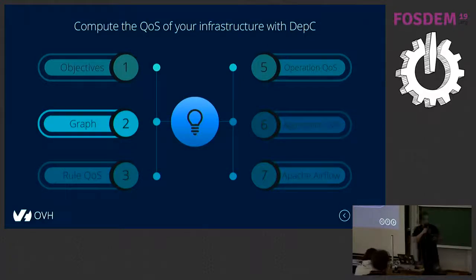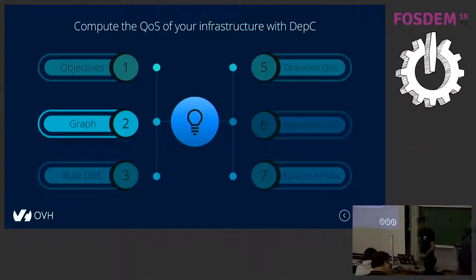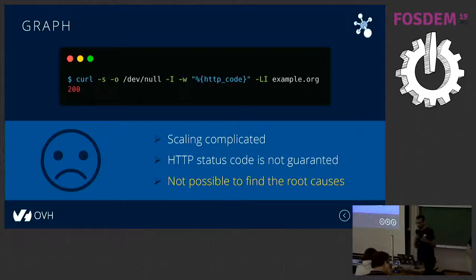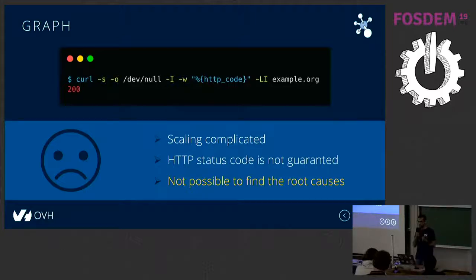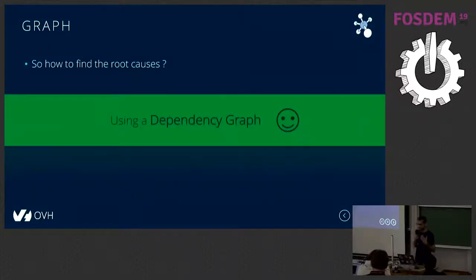The graph part of the project: the first thought was to get the HTTP status code of every website hosted by OVH, but it's complicated and not really handy. Sometimes it's even the customer's code which is not working — so it's not our infrastructure. In Depsy, we want to know the root causes, so the idea is to use a dependency graph to find them.